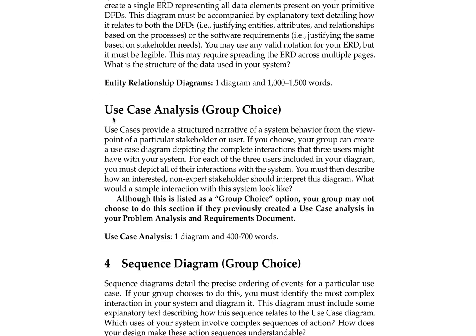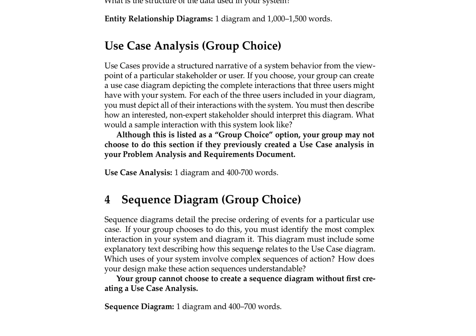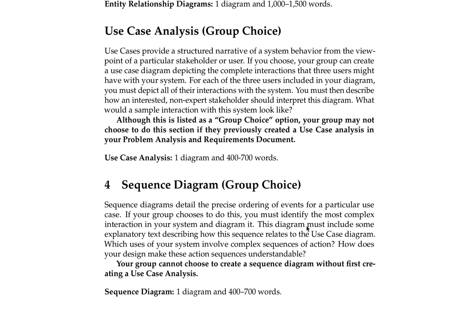Now we get to the first group choice option — you can see my first flaw. This should be labeled as the fourth option: the use case analysis. It's listed as a group choice option, so your group may not want to do this. You have to choose it if you've previously used use case analysis in your problem analysis and requirements document, as it may be redundant. Also, you can't choose to do the sequence diagram unless you've done the use case analysis — there's a dependency between the two.